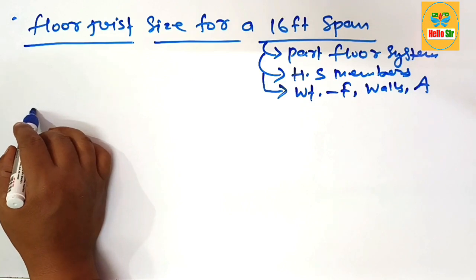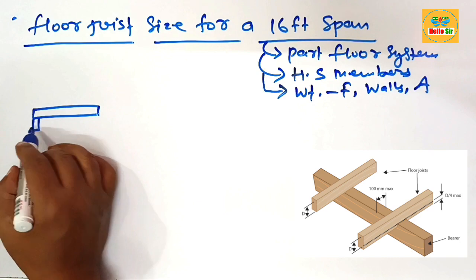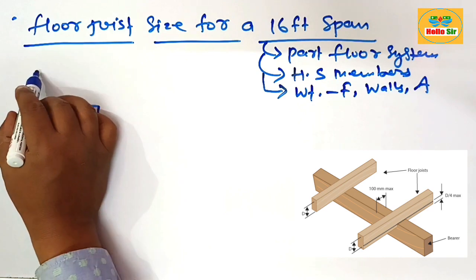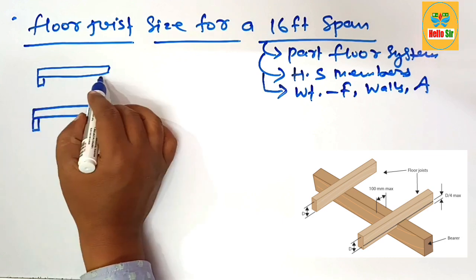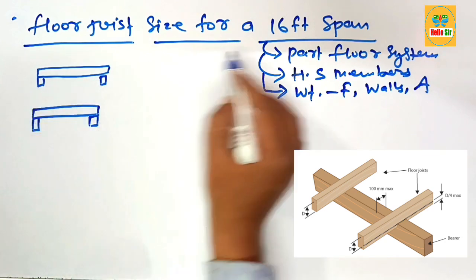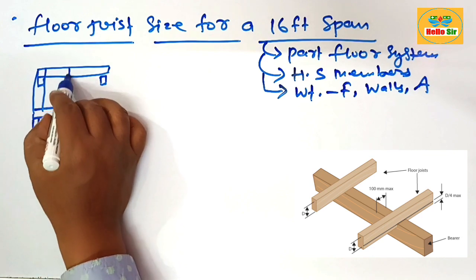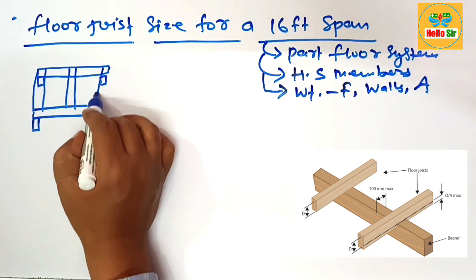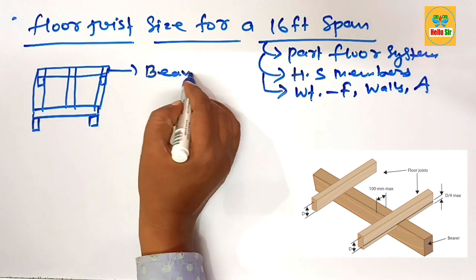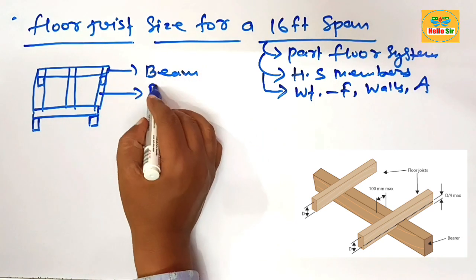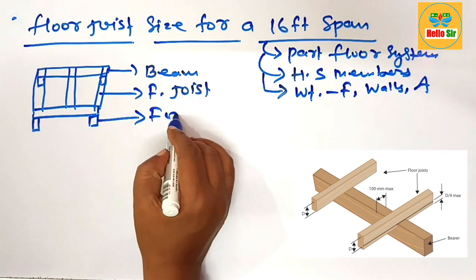Suppose this is a beam structure put over the foundation, and another beam here. This is the foundation, and your floor joists run horizontally, connecting the beams. So this one is your beam structure, this is your floor joist, and this is your foundation.